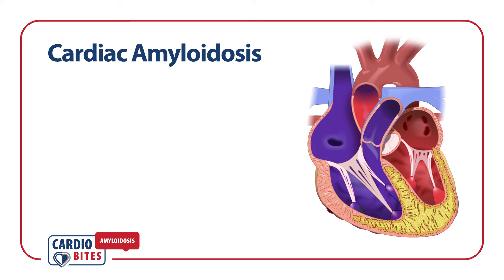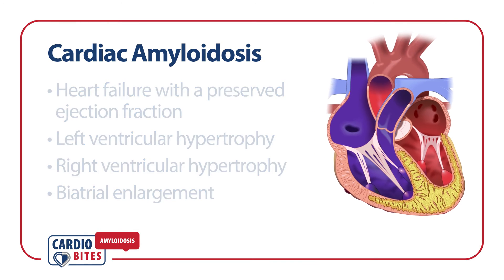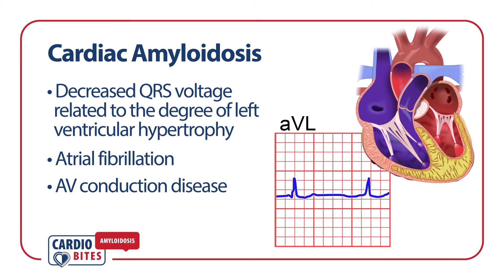Amyloidosis of any type that affects the heart is known as cardiac amyloidosis. Patients often present with symptoms of heart failure with preserved ejection fraction, or HFpEF. Additional cardiac manifestations include left ventricular hypertrophy, right ventricular hypertrophy, biatrial enlargement, decreased QRS voltage relative to the degree of left ventricular hypertrophy, atrial fibrillation, and atrioventricular conduction disease.